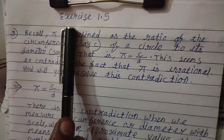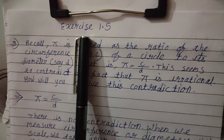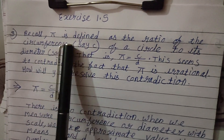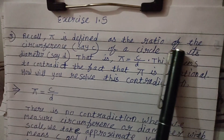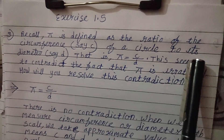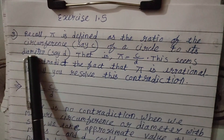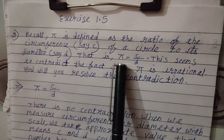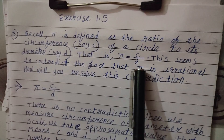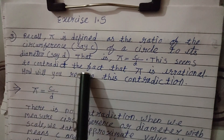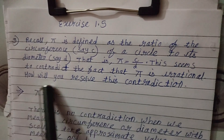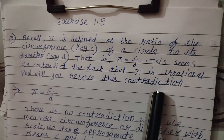Good morning students. Today we will take exercise 1.5, question 3. Recall that pi is defined as a ratio of circumference C of a circle to its diameter D. That is, pi equals the ratio of circumference to diameter. This seems to contradict the fact that pi is an irrational number. How will you resolve this contradiction?